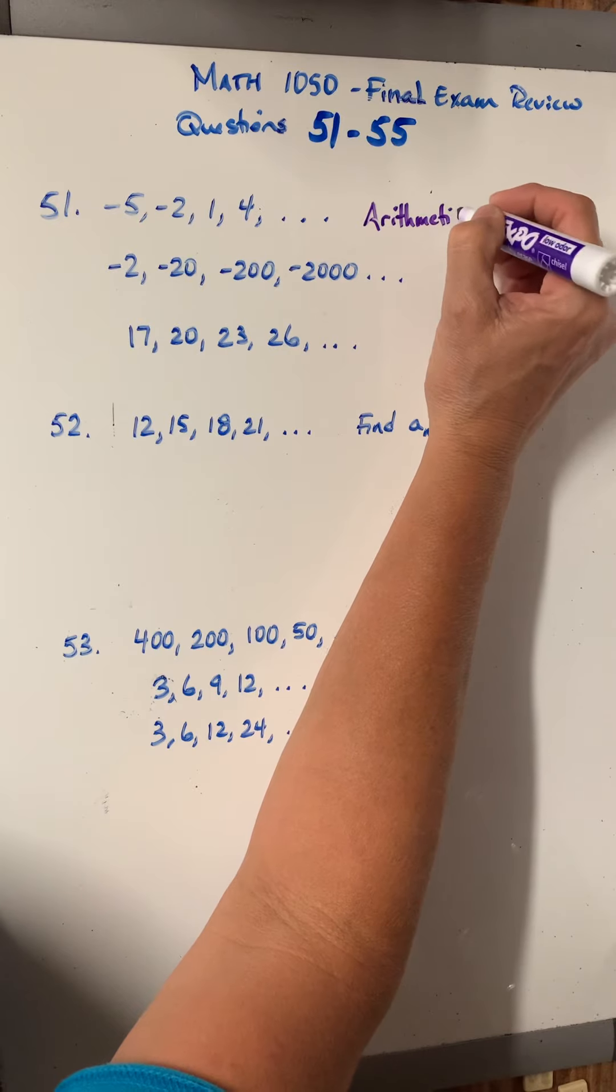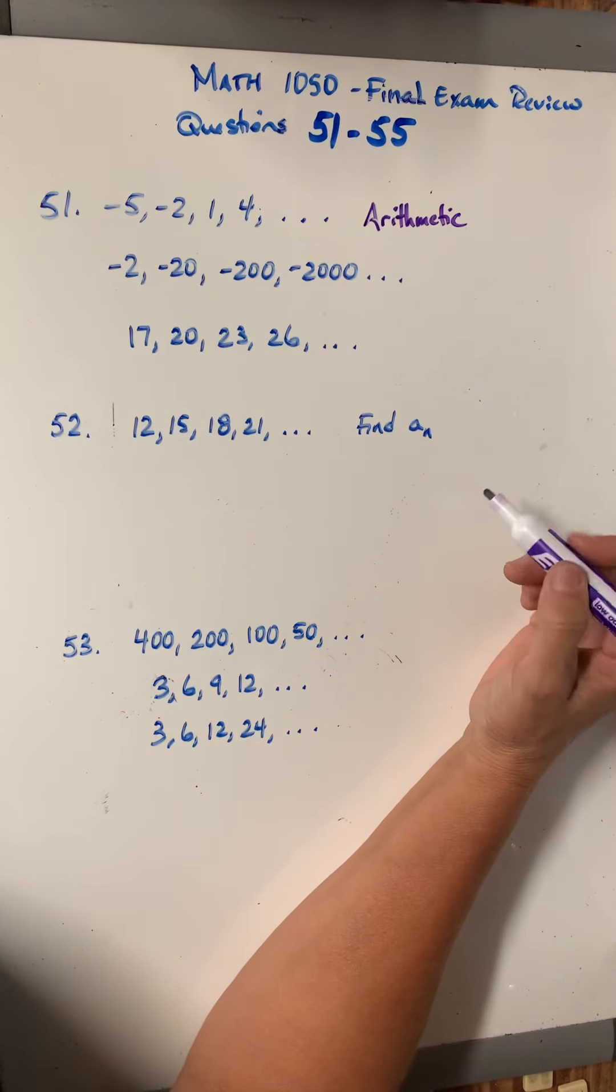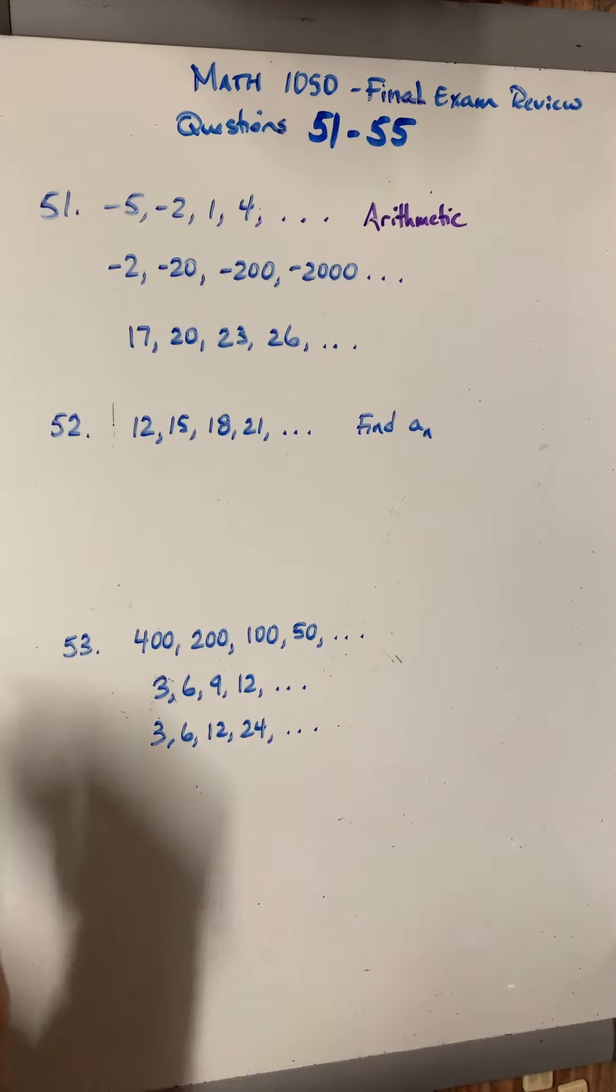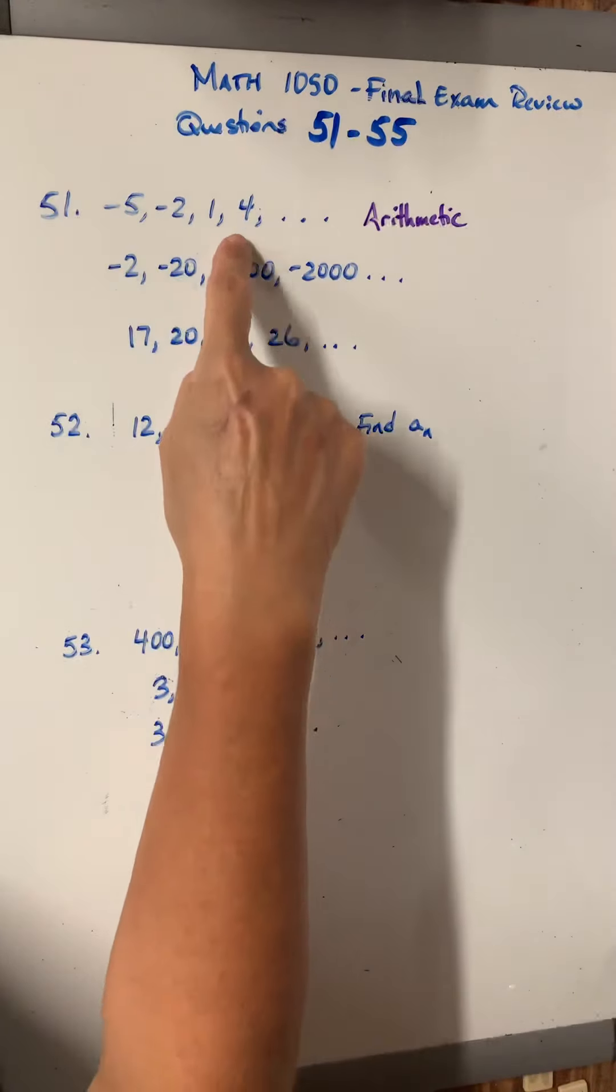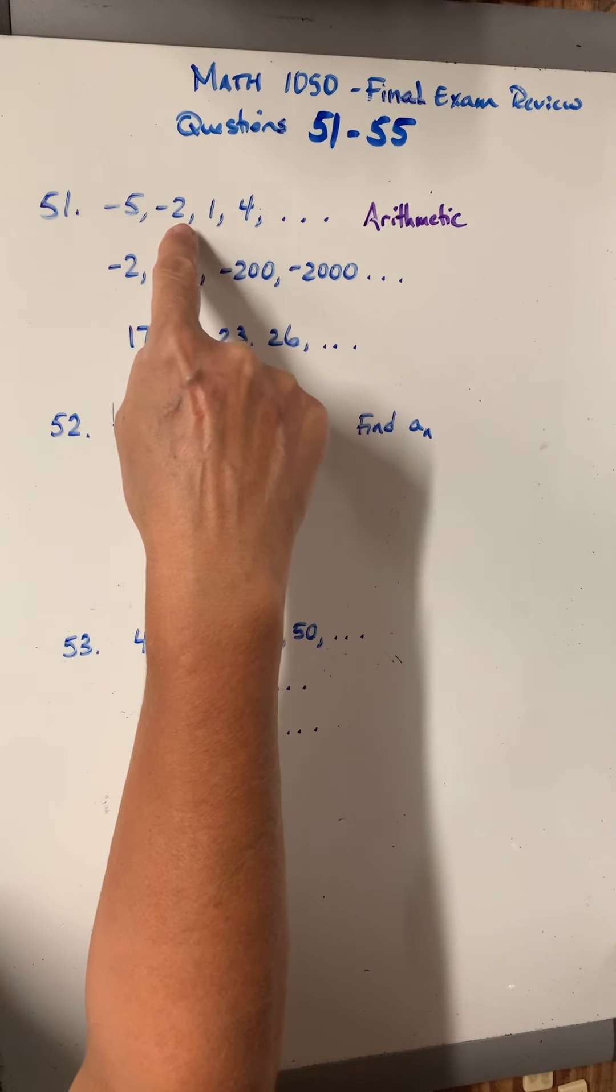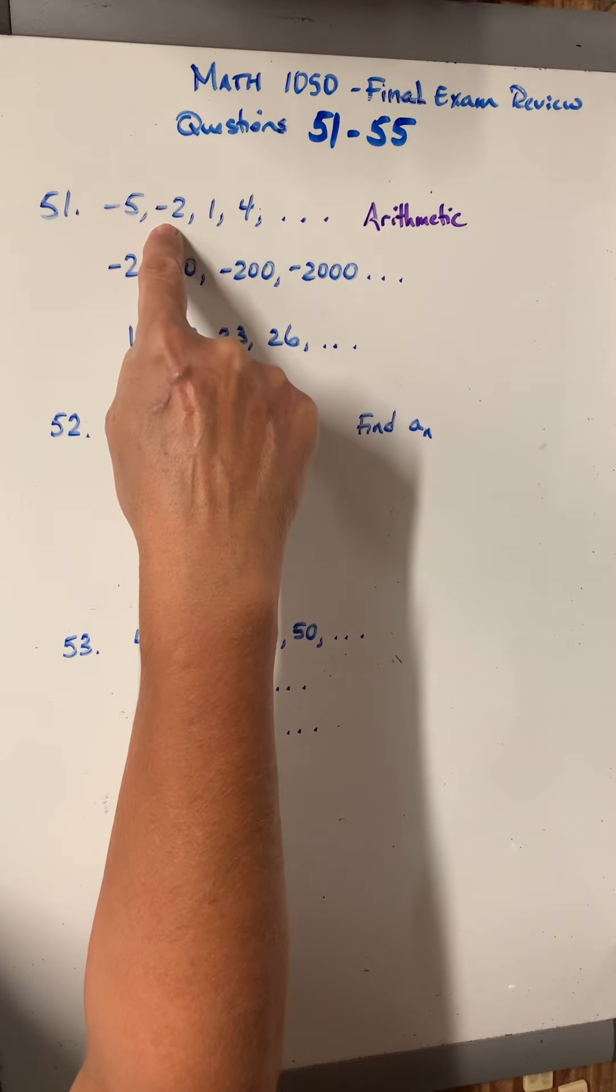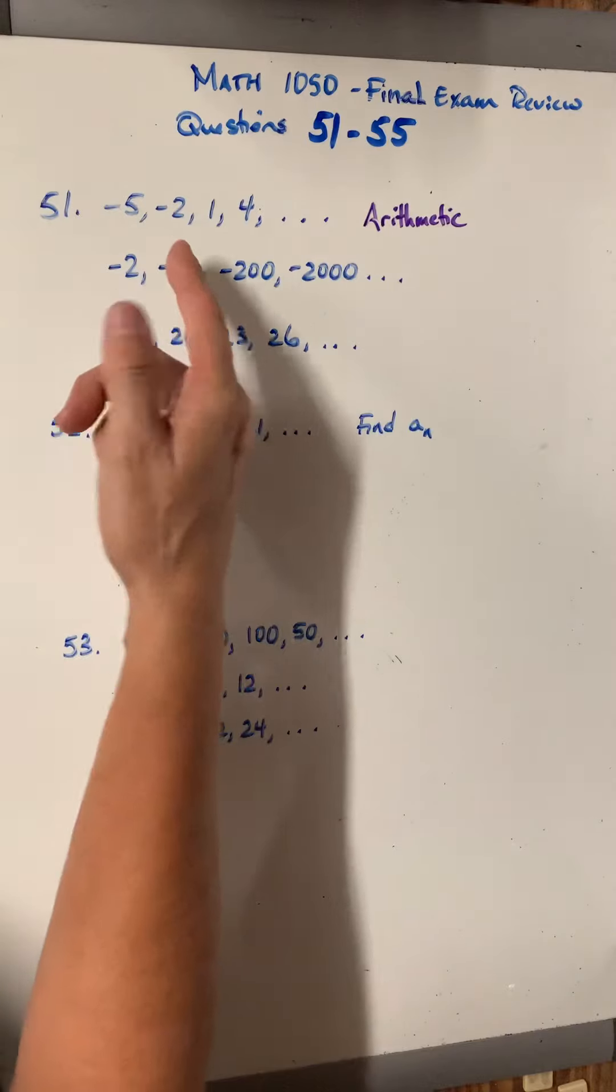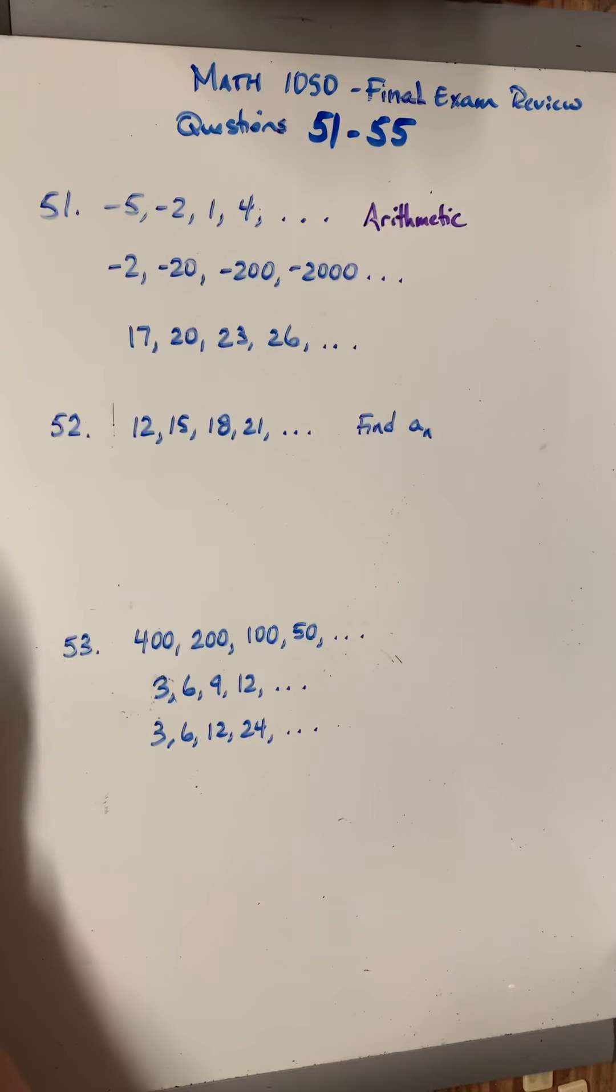So if you didn't necessarily look at that and easily count it up, then if you want to look at a formula, you could take any term, subtract the one before it. So 4 minus 1 is 3. And then try it again. 1 minus a negative 2 is 3. Negative 2 minus a negative 5 is 3. So if that is consistent, then it's arithmetic.